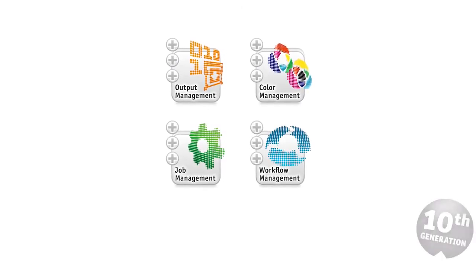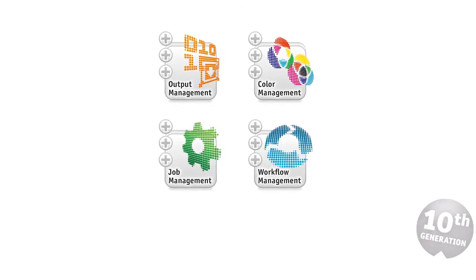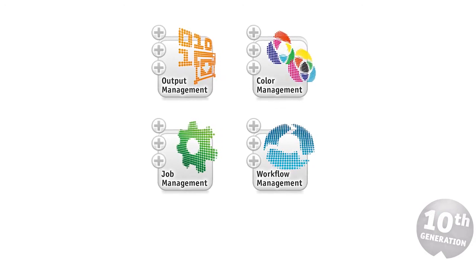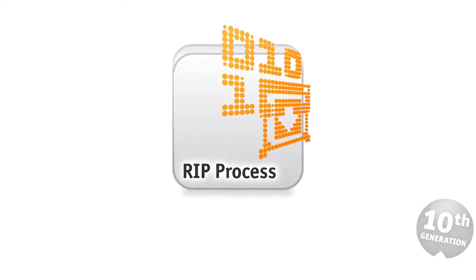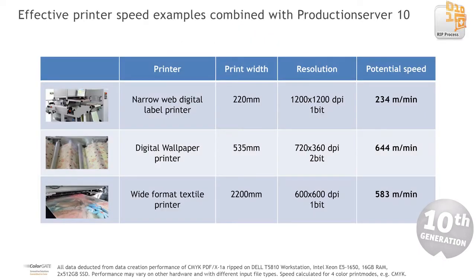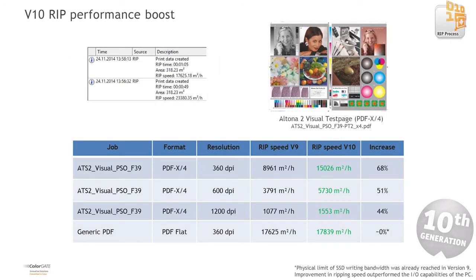ColorGate presents with RIP Software version 10 a number of additional new features and improvements from the categories Output, Color, Job and Workflow Management. Production Server 10 further increases productivity with the latest optimizations. Modern inkjet printers and contemporary industrial high-performance printing systems are capable of printing hundreds or even thousands of square meters per hour. It is vital that the front-end solution keeps up with these speed requirements, including PDF or raster formats such as TIFF. Since version 6, every new iteration of Production Server has significantly reduced the time to create print data. Version 10 will be no exception.